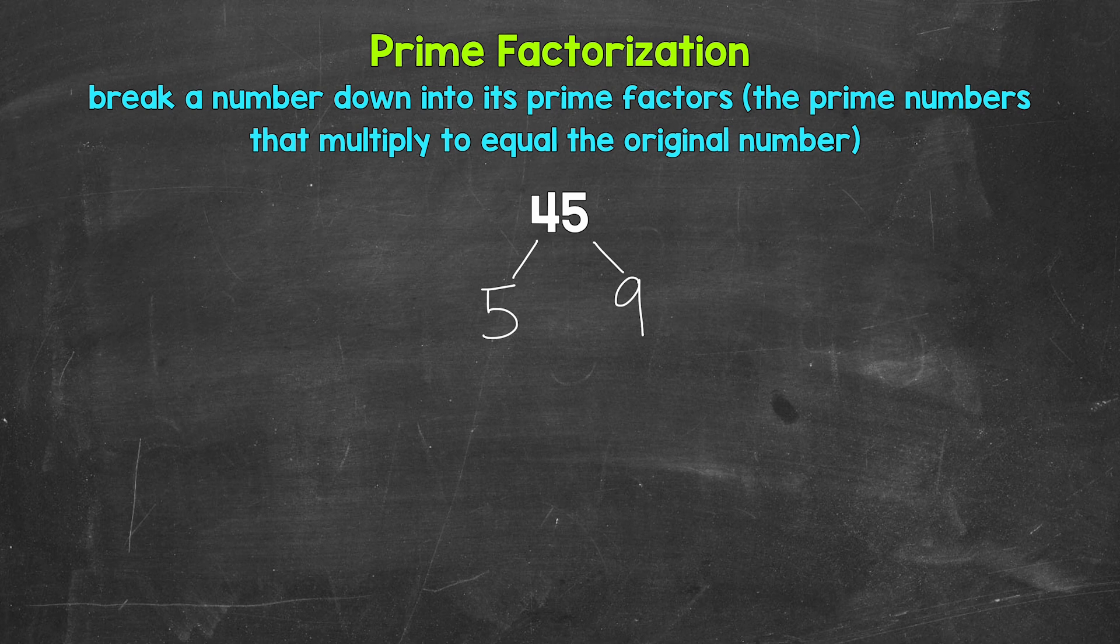So there can be multiple ways to do these. Now let's continue breaking this down. We have 5 and 9. So we need to go from here until we only have prime numbers. Now 5 is a prime number. The only factors are 1 and 5. So we are done here. We can't break 5 down any further.